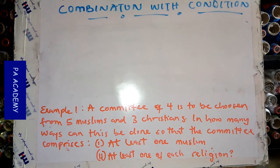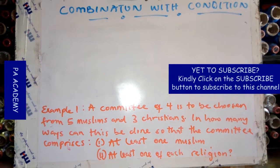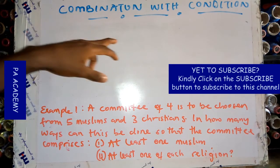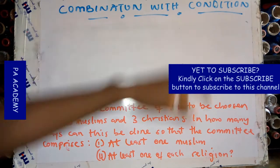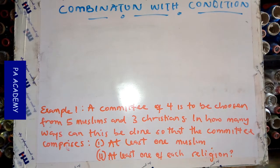Hello and welcome to PA Academy. In the previous part of this video we looked at permutation, combination without condition. In this part, what we are looking at is combination with condition — what it means when you are asked to select or choose from a given number of items or elements with a condition. That's what we are going to be looking at in this part of the video.